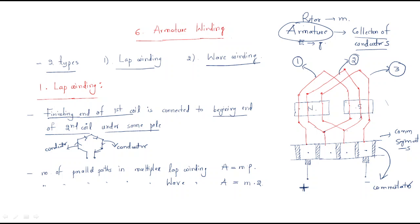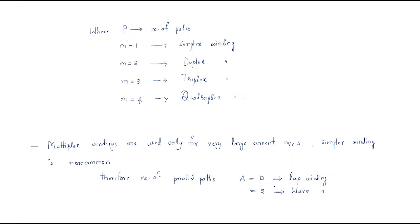The formula for the number of parallel paths in multiplex lap winding is A equals M into P. For wave winding, the number of parallel paths is A equals M into 2. Here P is the number of poles and M is the multiplexity.